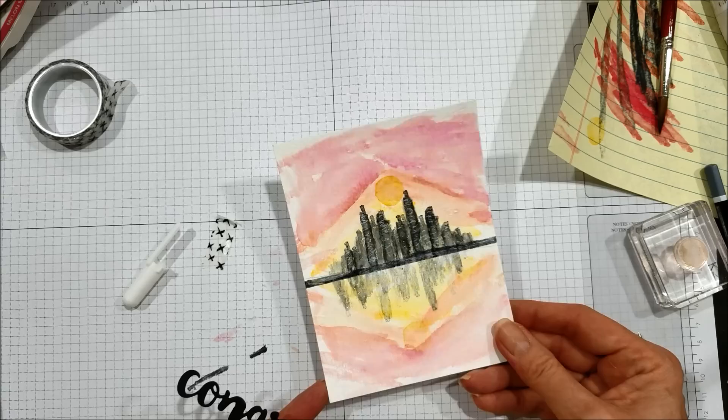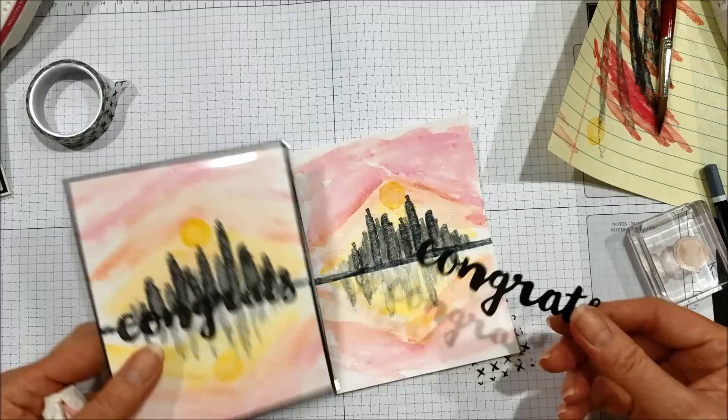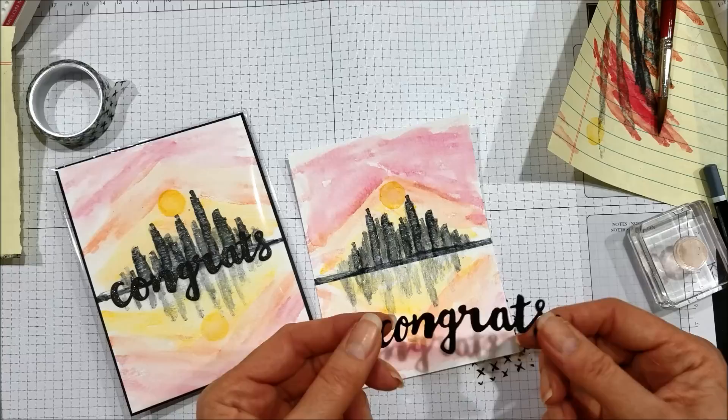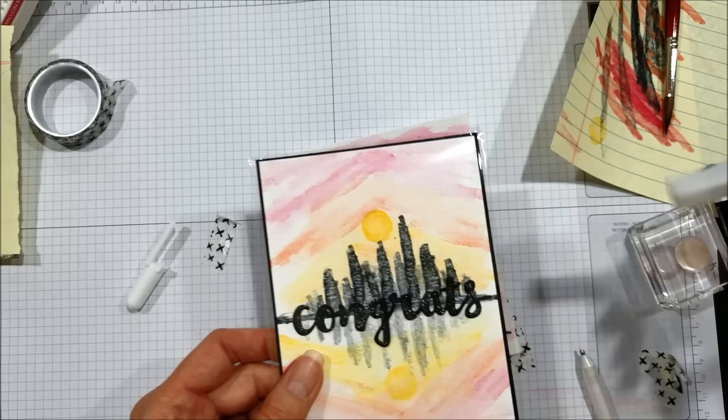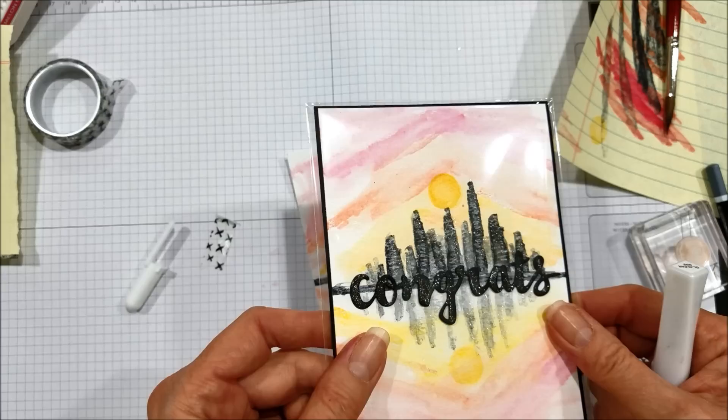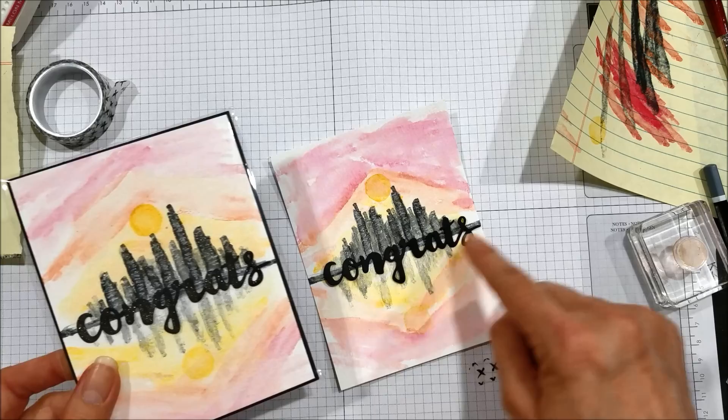Now to finish this off, all I do is I have cut two of these congrats die cuts from the Sunshine Wishes dies from Stampin' Up. I've applied a little bit of glue to glue them together, and then I have taken the Wink of Stella pen and went over that word, which gives it quite a great shimmer actually.